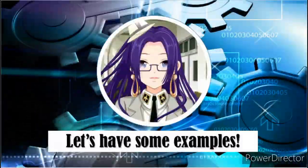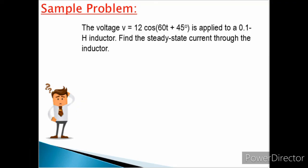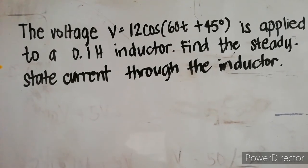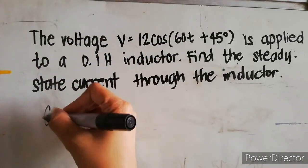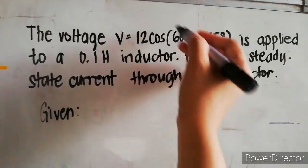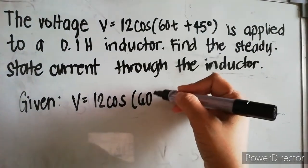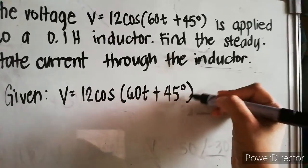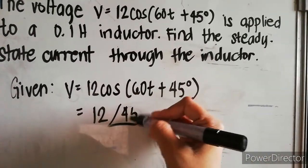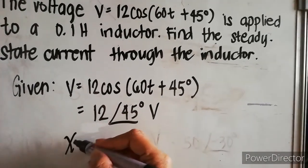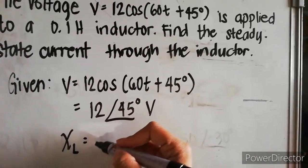Now let's have some examples about inductive and capacitive reactances. For our first example, the voltage V is equal to 12 cosine of 60t plus 45 degrees is applied to a 0.1 henry inductor. Find the steady-state current through the inductor. The given in phasor form is 12 angle 45 degrees volts.